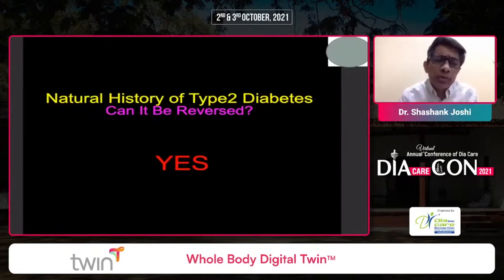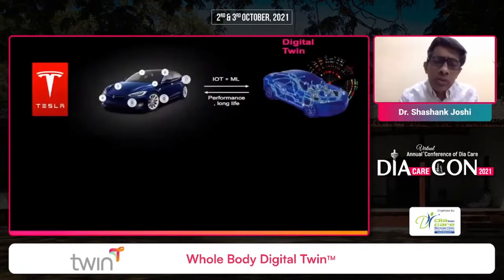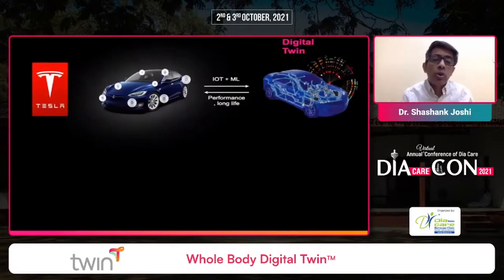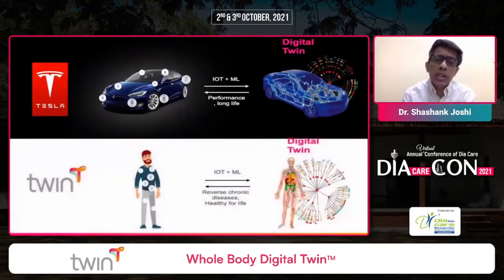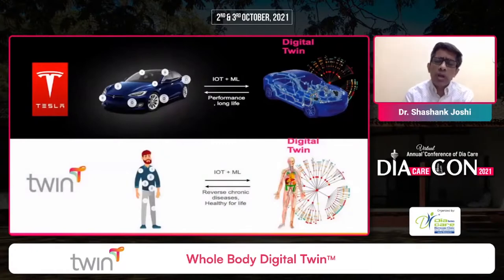This showed one simple concept: in the natural history of type 2 diabetes, if in the first decade of a diabetic's life you are able to do appropriate lifestyle modification, you can reverse type 2 diabetes. But can we use artificial intelligence? These diets are very difficult to follow — a severe caloric restriction of 800 calories is very hard — and that's where digital twin technology comes in.